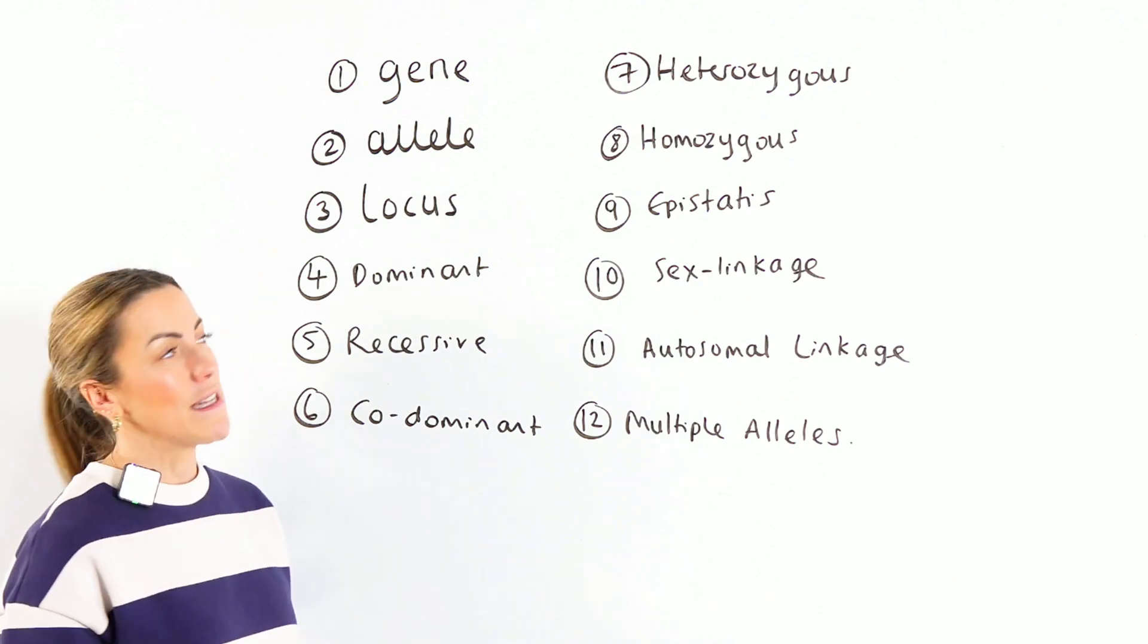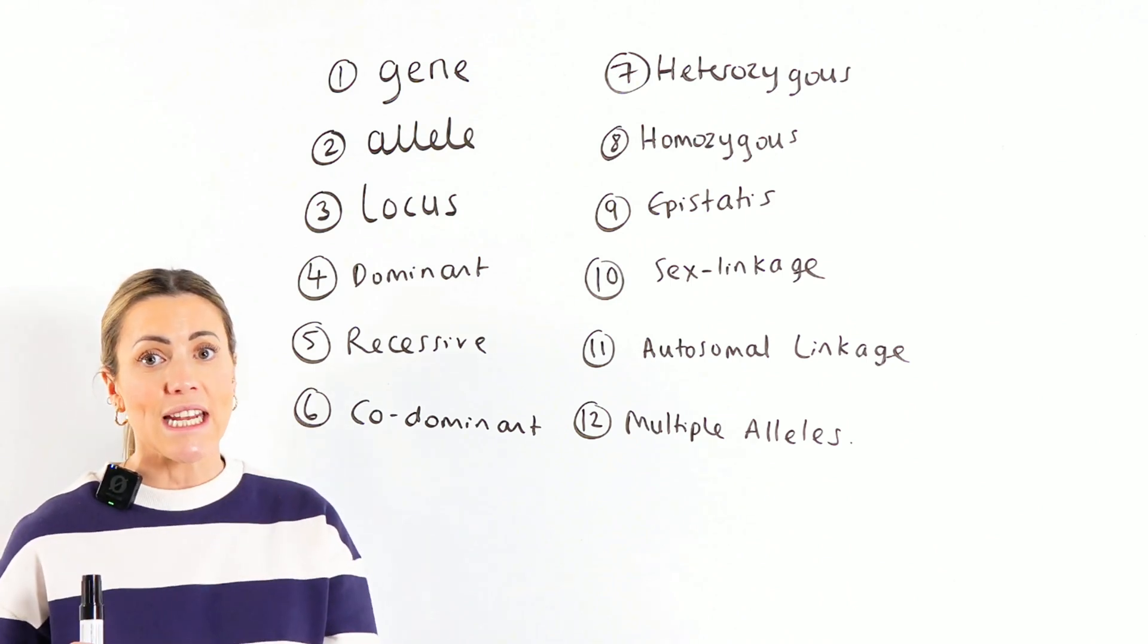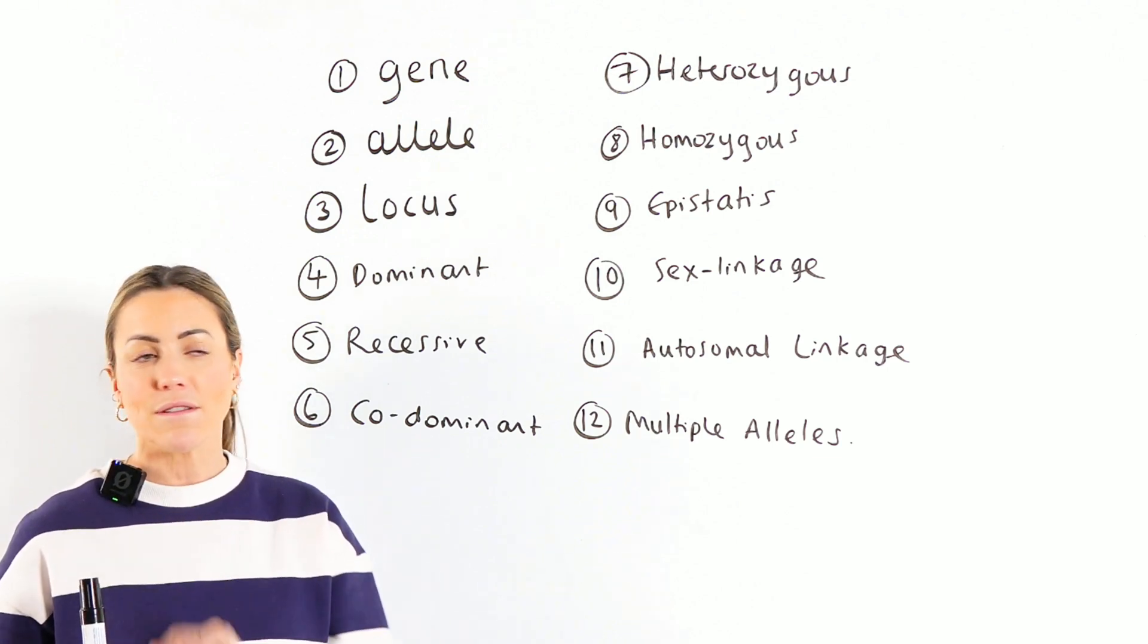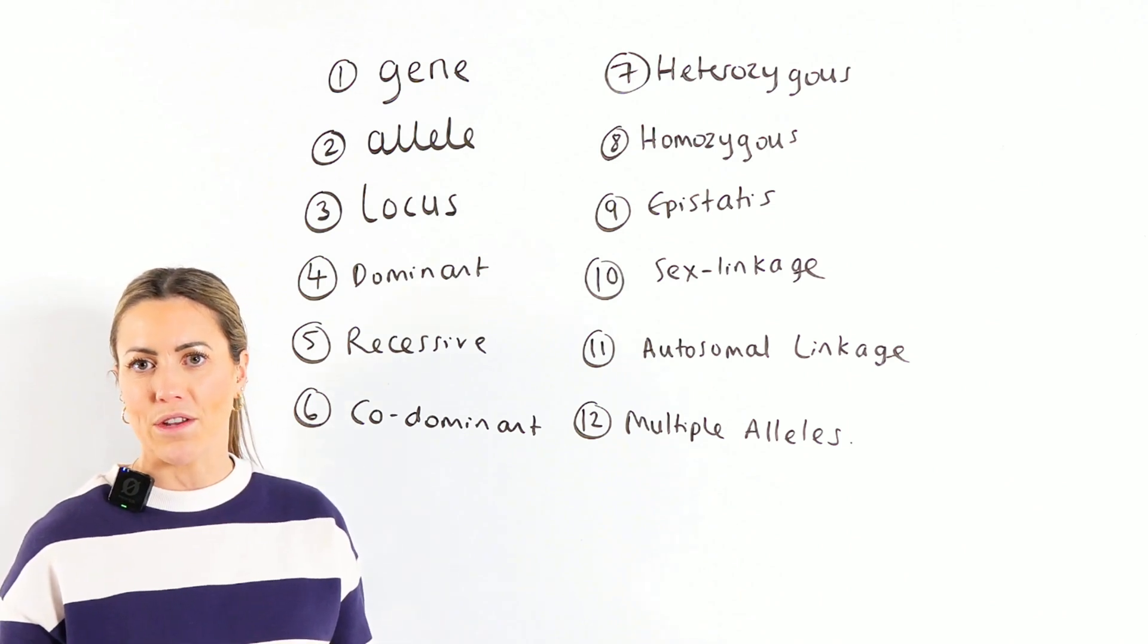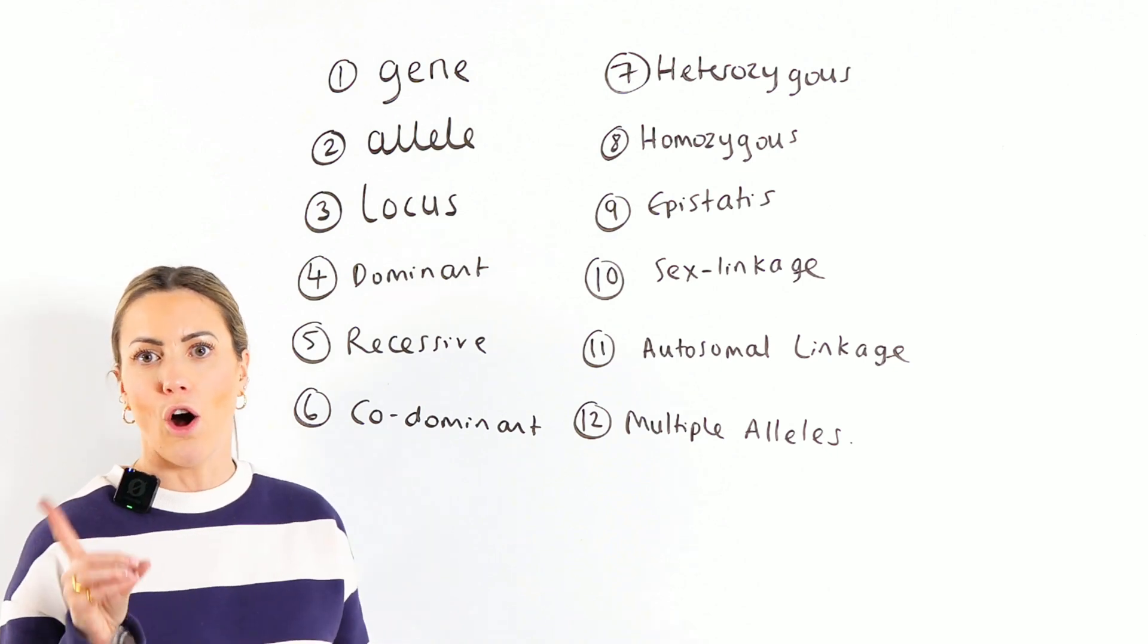Now, on the AQA specification for gene, it also adds that a gene has a specific locus. So if you see in your exam that the definition is worth two marks, maybe that's what they want you to say. It has a specific locus or a specific position on the chromosome.